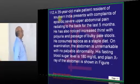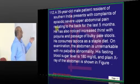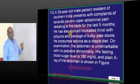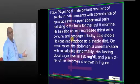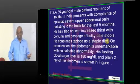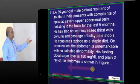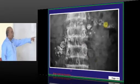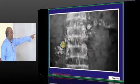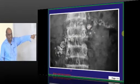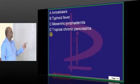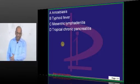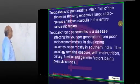A 35-year-old from South India complains of episodic severe upper abdominal pain radiating to the back. There is also thirst, polyuria, bulky pale stools — meaning steatorrhea. Blood sugar is 180 fasting, meaning he also developed diabetes. Abdominal imaging shows calcification along the course of the pancreas. This is tropical chronic pancreatitis, which is very common in Kerala.